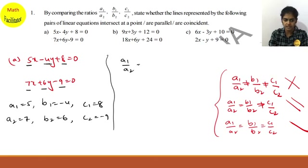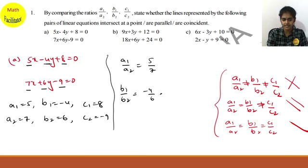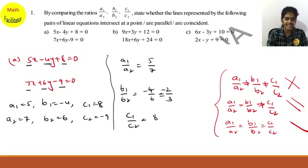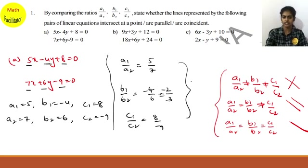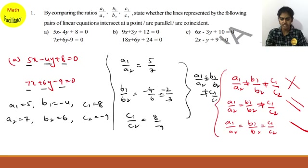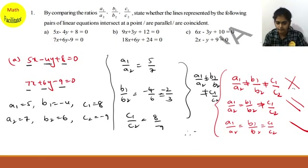Now finding the ratios: a1/a2 is 5/7, b1/b2 is minus 4/6, which simplifies to minus 2/3, and c1/c2 is 8 by minus 9. Since a1/a2 is not equal to b1/b2 is not equal to c1/c2 — none of the ratios are equal — therefore these are intersecting lines, meeting at a single point.